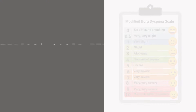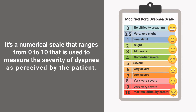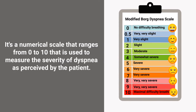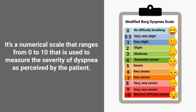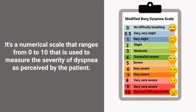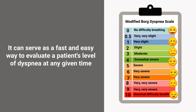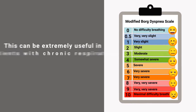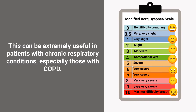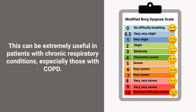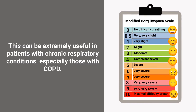So what is the Modified Borg Dyspnea Scale? It's a numerical scale that ranges from 0 to 10 that is used to measure the severity of dyspnea as perceived by the patient. It can serve as a fast and easy way to evaluate a patient's level of dyspnea at any given time. This can be extremely useful in patients with chronic respiratory conditions, especially those with COPD.